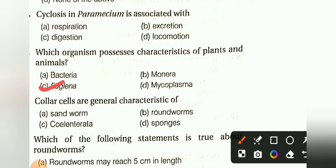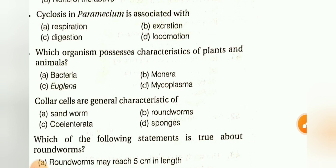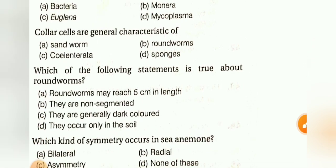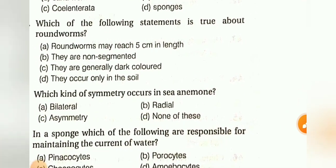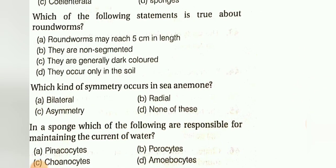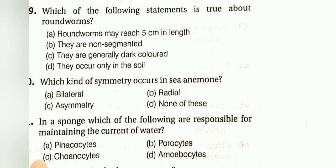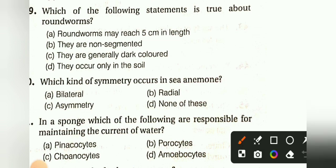Collar cells are a general characteristic of: sandworm, flatworm, Cnidaria, or sponges. The answer is sponges. Which of the following statements is true about roundworms? They may reach 5 cm in length, they are non-segmented, they are generally dark colored, or they occur only in soil. The answer is B: they are non-segmented.